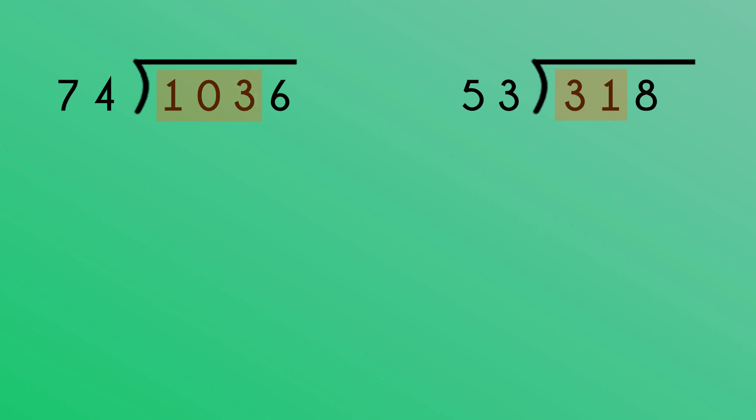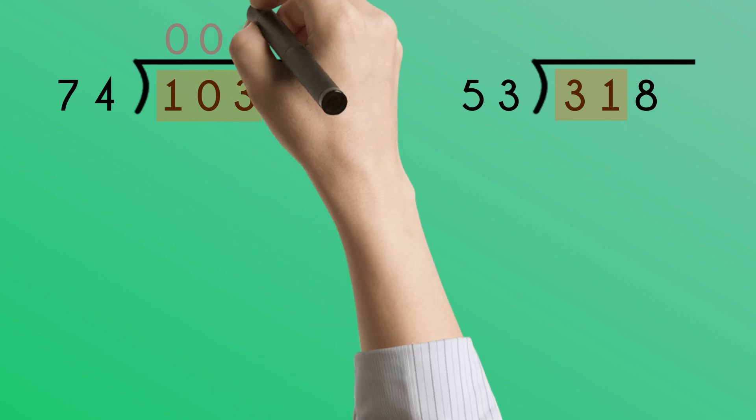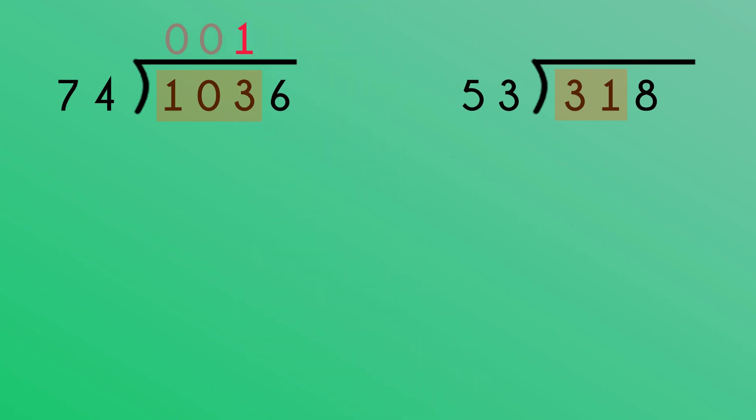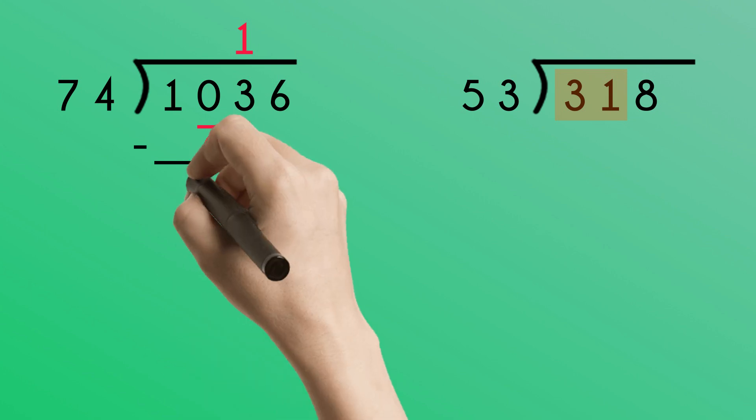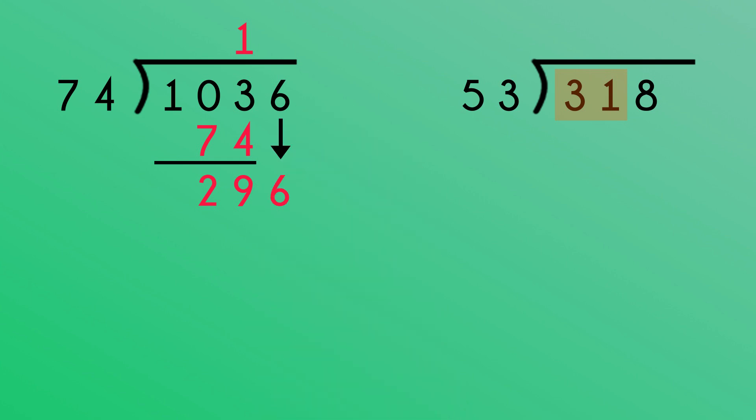In the first problem, the first step would then become how many 74s fit into 103. It fits once. Now multiply. 74 multiplied by 1 is 74. Then subtract. 103 subtract 74 is 29. Now bring down the 6 and we have 296.